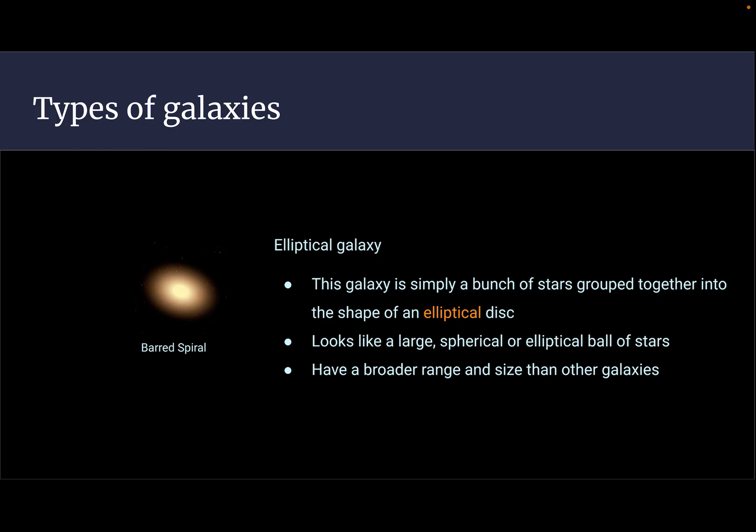An elliptical galaxy is a galaxy that has a bunch of stars grouped together in the shape of an elliptical disk. These look like large spherical or elliptical balls of stars. They have a broader range and size than other galaxies.